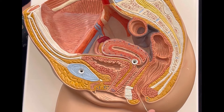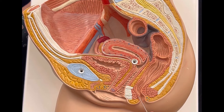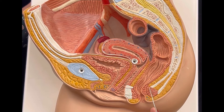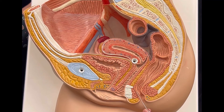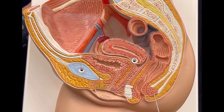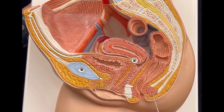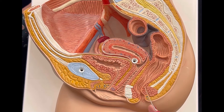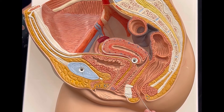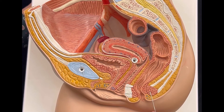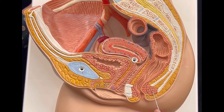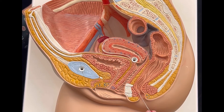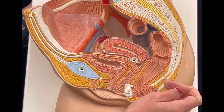In the anus, we have the internal anal sphincter, which is internally located in relationship to the external anal sphincter. The external anal sphincter surrounds the internal anal sphincter. The external anal sphincter is made up of skeletal muscle, so we have conscious control over it, while the internal anal sphincter is made up of smooth muscle, meaning we cannot consciously control it. When we contract the external anal sphincter, we can squeeze the internal anal sphincter and nothing gets out of the rectum.